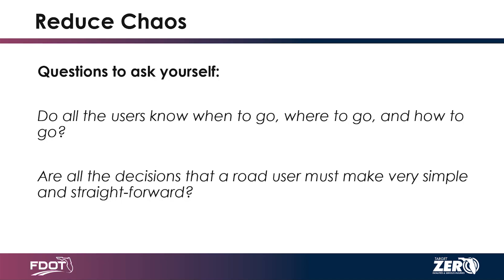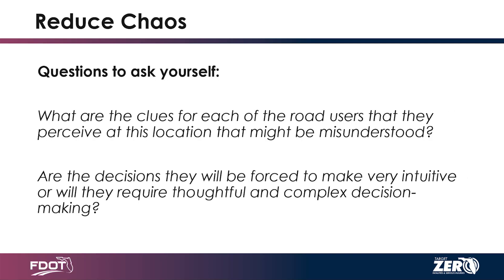Pedestrian buttons are a big one — we've done a lot of work on where to put pedestrian buttons for which direction you want to cross. Are we making that abundantly clear? What are clues that each road user might perceive at this location that might be misunderstood? Are the decisions you'll be forced to make intuitive, or do they require sitting and thinking through complex decision making?